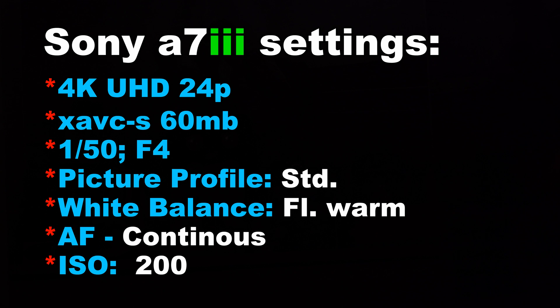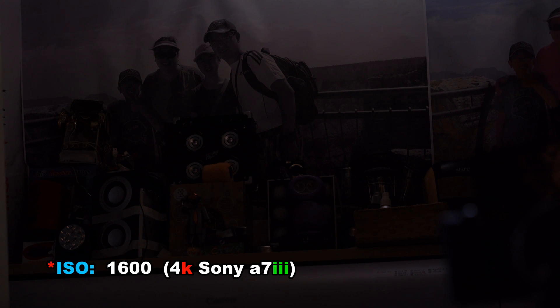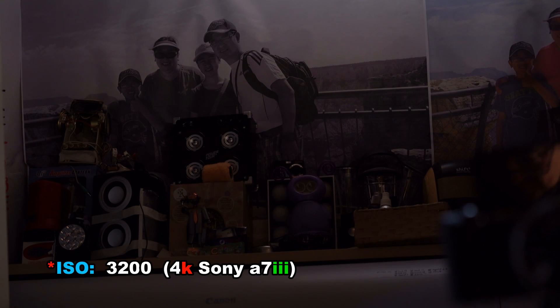We're doing the 4K comparison on the a7 III — XAVC 4K, 24 frames per second, 60 megabits, shutter speed 1/50th, f4, ISO 200, standard picture profile, warm fluorescent light setting, AF continuous. So this is ISO 200, ISO 400, ISO 800 — you can probably see something already — ISO 1600, have a look around.